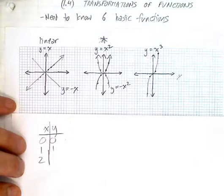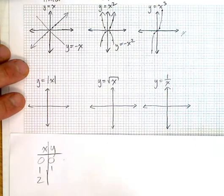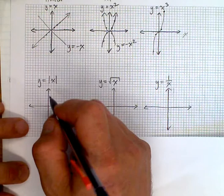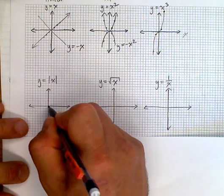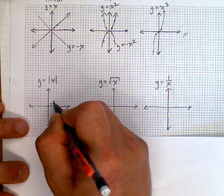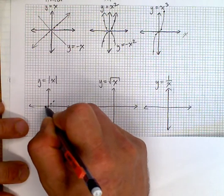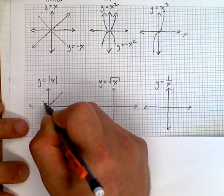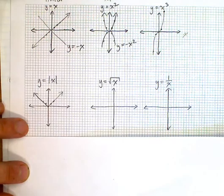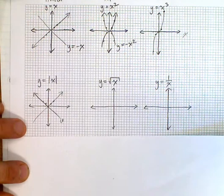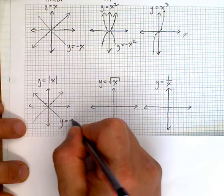We have the absolute value of x. Absolute value just simply means that your value always becomes positive. So the absolute value of 0 is 0, absolute value of 1 is 1, 2 is 2. What's the absolute value of negative 1? 1. The absolute value of negative 2, 2. We have a V. And similarly, it's going to open down for a negative absolute value of x.